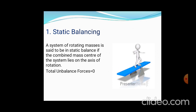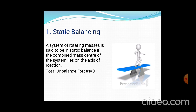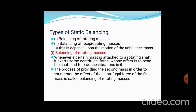In static balancing, you have to balance only the forces acting on the system. If the mass center lies on the axis of rotation, the balancing is known as static balancing. For example, a man standing on a plate which rotates either left or right, maintained by placing a balance mass over the plate. The types of static balancing are: balancing of rotating masses and balancing of reciprocating masses.